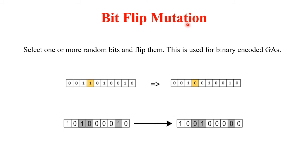In bit flip mutation, bit values are flipped to perform mutation. This technique is best suited for binary encoding genetic algorithms. One or more random bits are selected and flipped. For example, one parent has a selected bit where 1 is flipped to 0. When more than one bit is selected, each is flipped: 1 changes to 0, 0 changes to 1, and 1 changes to 0.